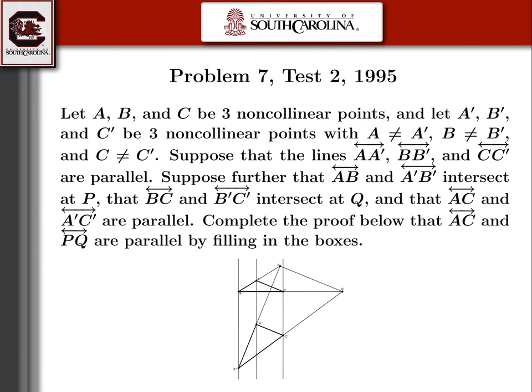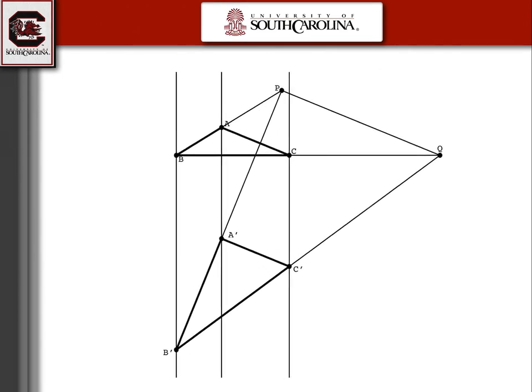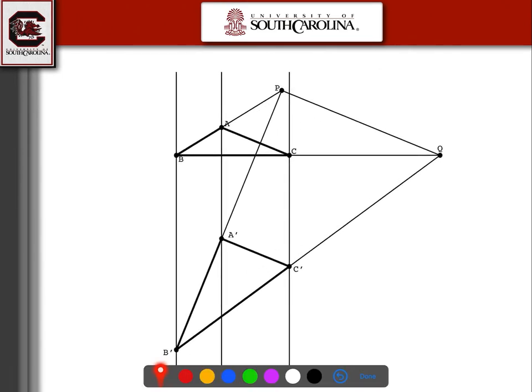I'm going to give an example of Desargues' theorem from a past test. This is a special case of Desargues' theorem, and I will explain the case. I'm going to have different points A, B, and C in this picture. I'm going to assume all three of these points and all three of these other points — all six of them — are different.